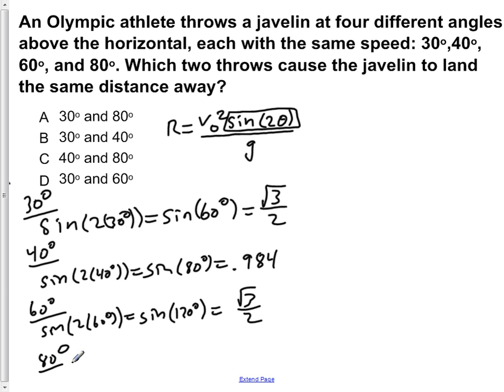Then if we do 80 degrees, the sine of 2 times 80 degrees is equal to the sine of 160 degrees, which is equal to 0.342.